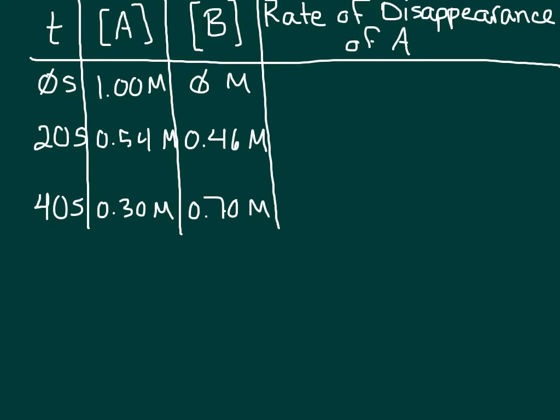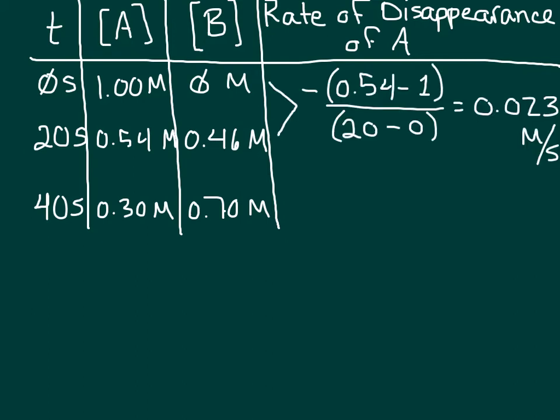This will allow us to calculate the average rate of disappearance of A, or the average rate of appearance of B over time. To find the average rate of this reaction during the first 20 seconds, we simply take the change in the concentration of A over that period of time and divide it by how much time has elapsed. So we have 0.54 minus 1 over 20 minus 0.